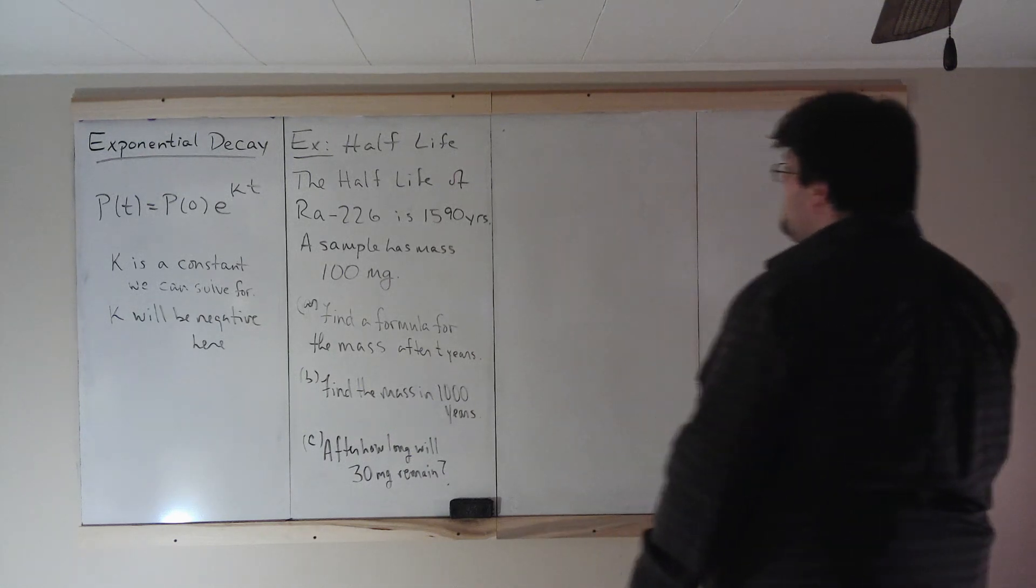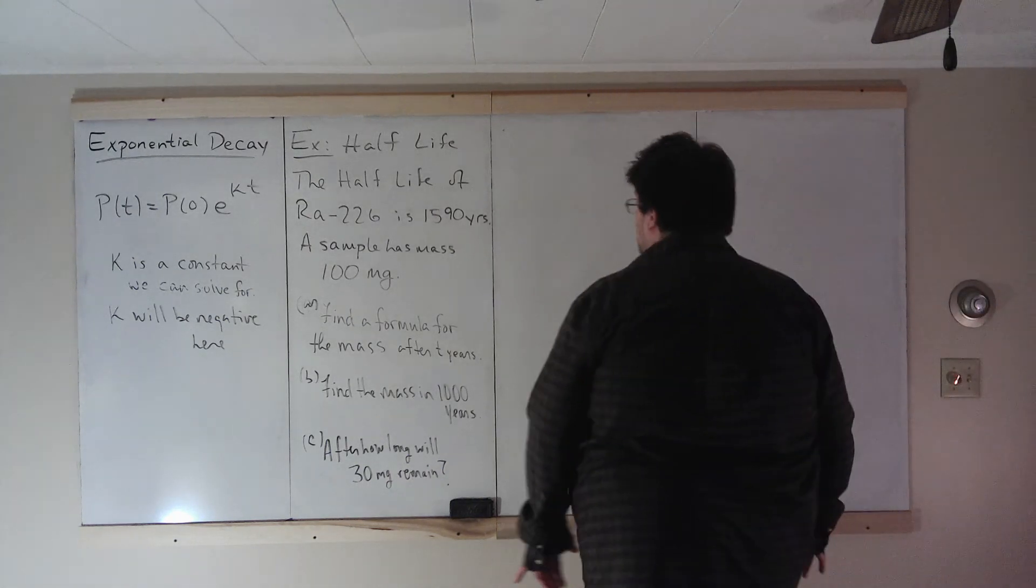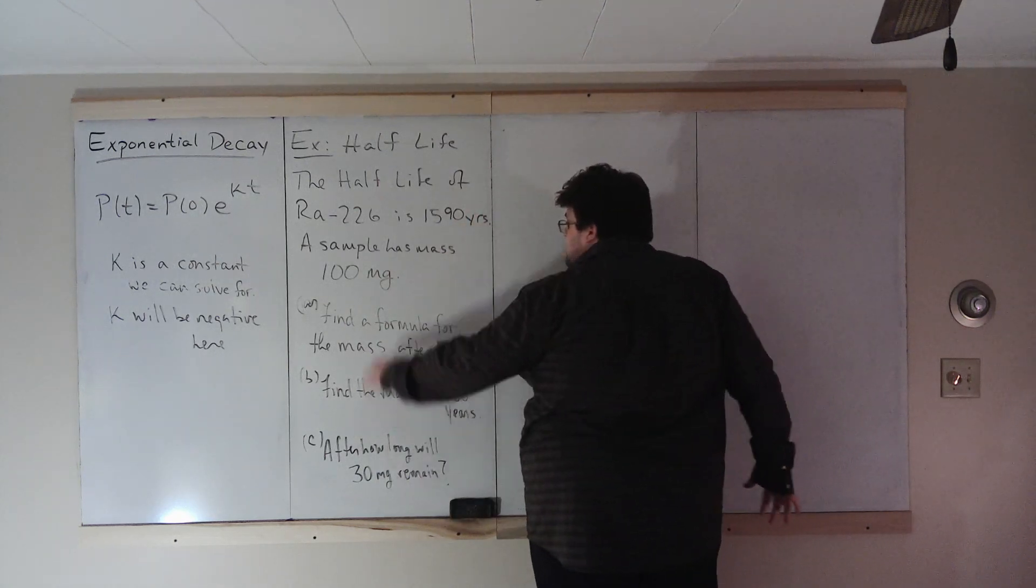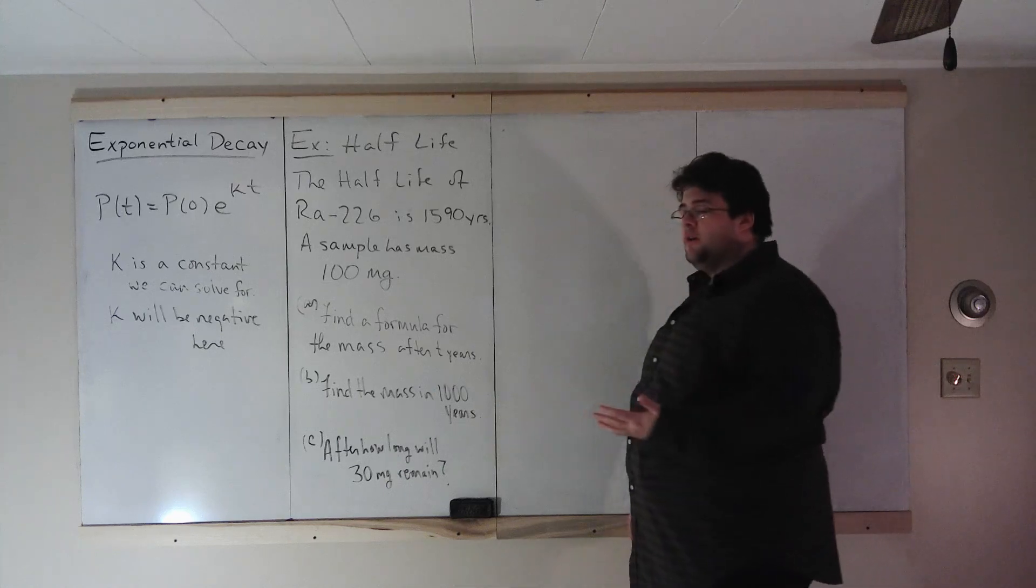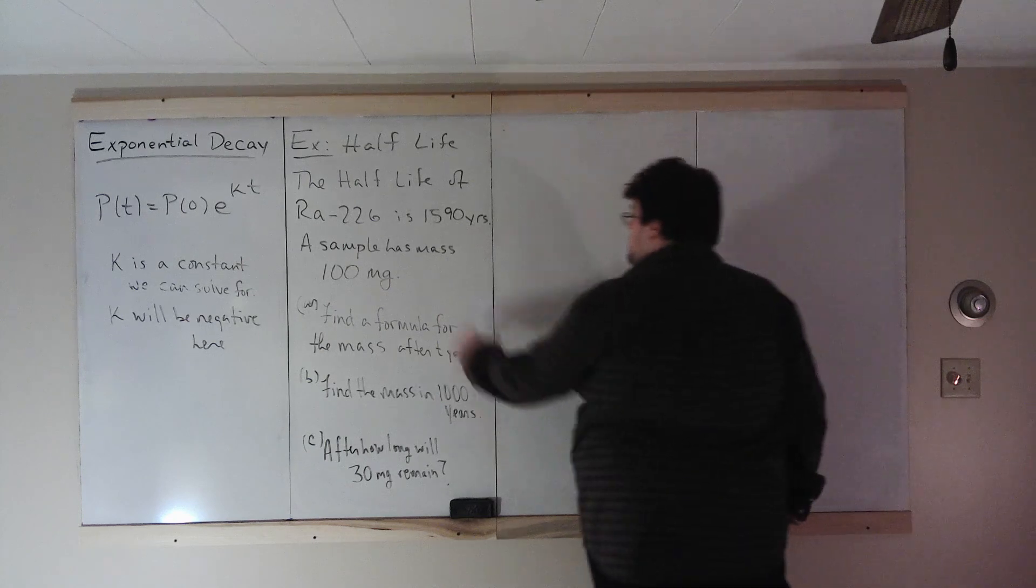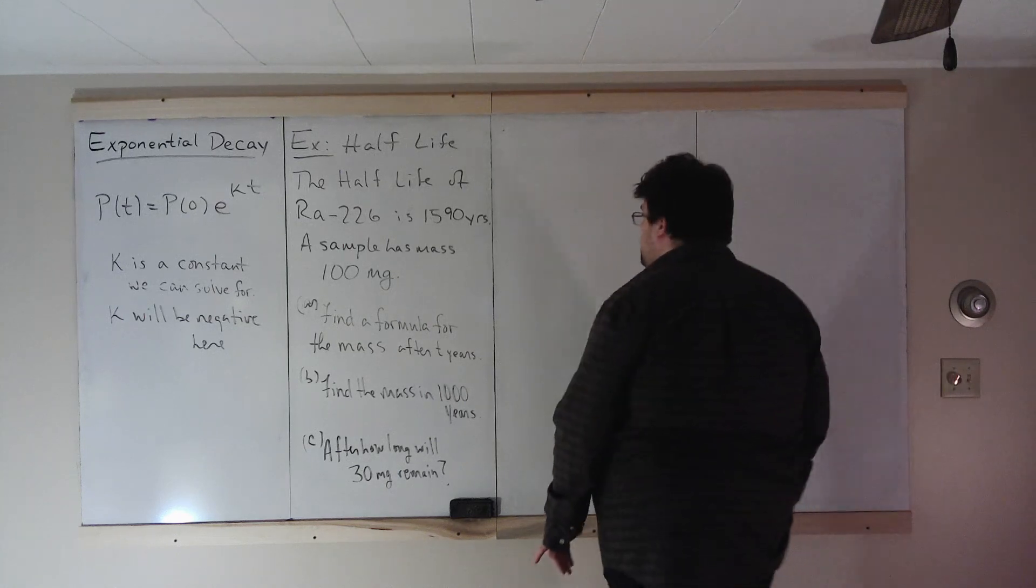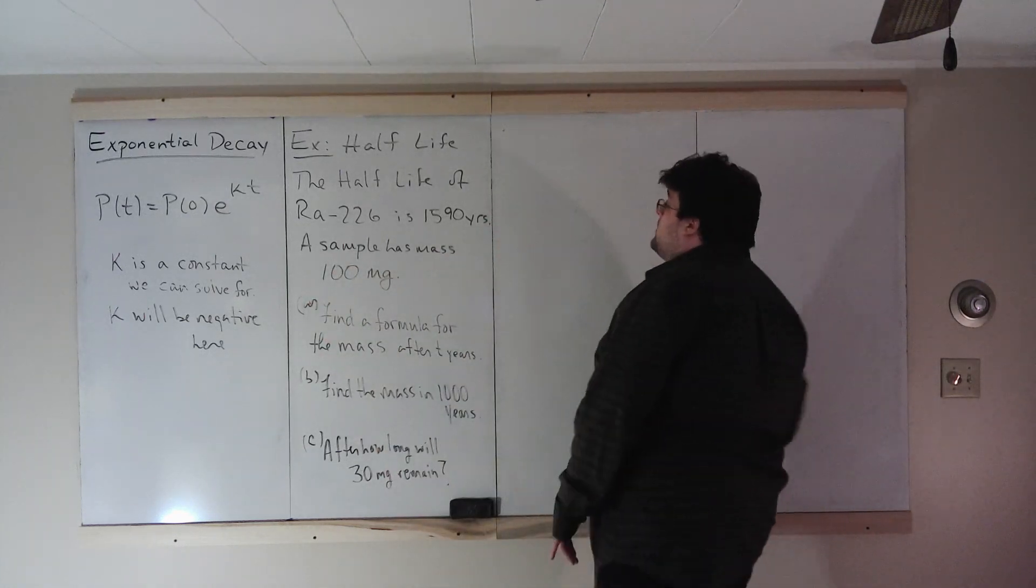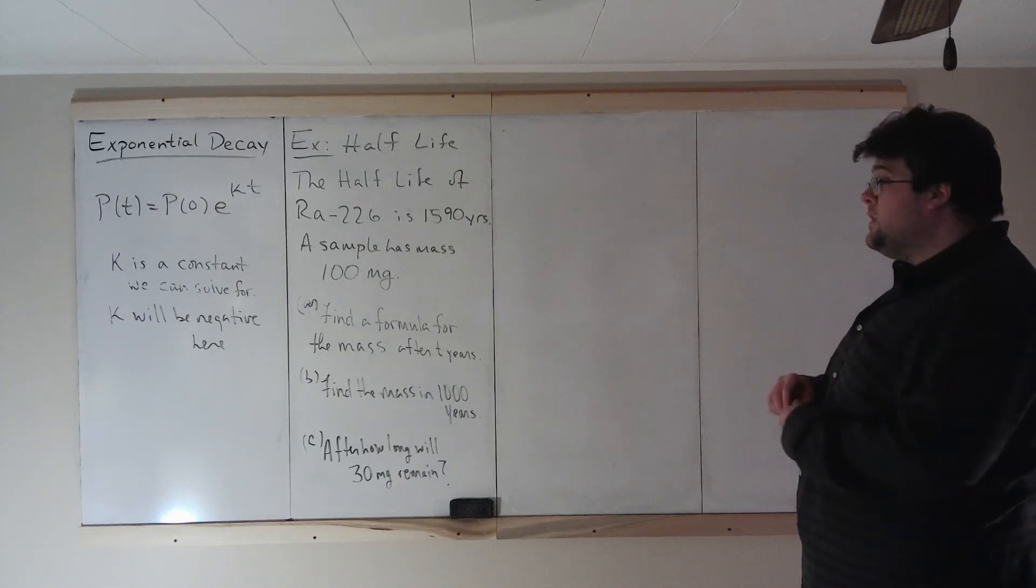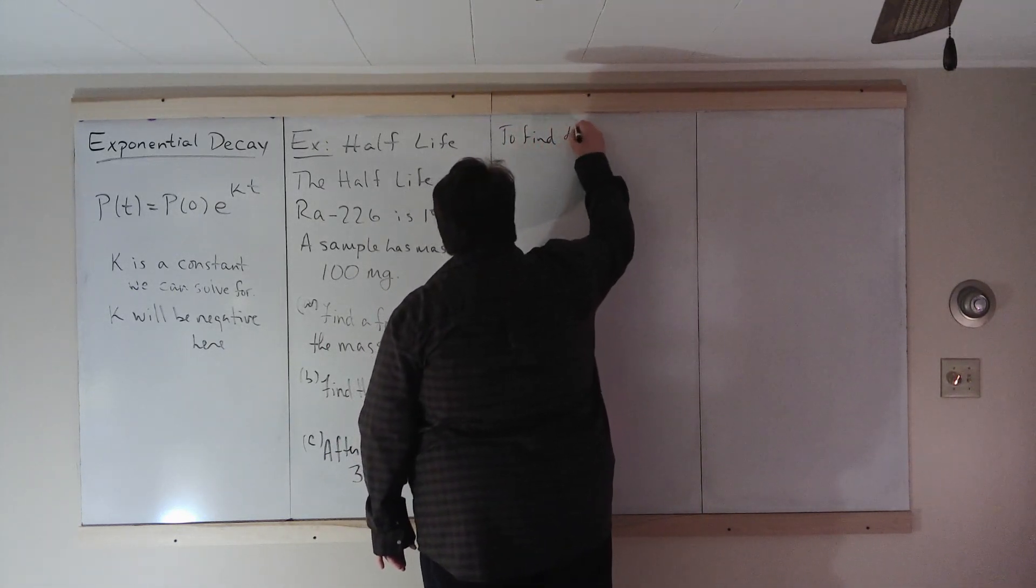Half-life is something in chemistry and physics where you have a certain amount of some radioactive substance, and the half-life is how long it takes for half of it to decay. So in this example, the half-life of radium-226 is 1,590 years. A sample has mass 100 milligrams. To interpret half-life, we can use these numbers. If we have 100 milligrams and it's a half-life of 1,590 years, that means in 1,590 years, there are going to be 50 milligrams left.